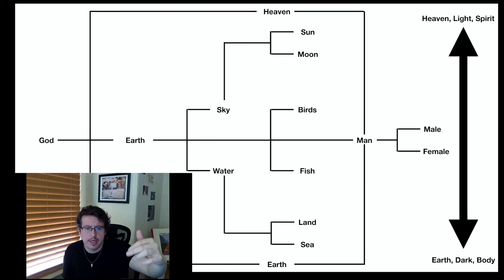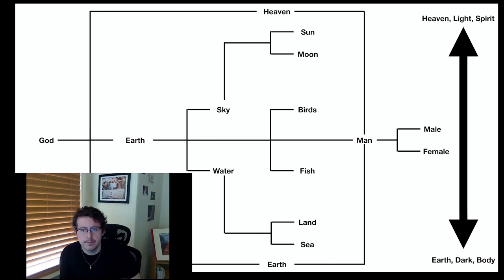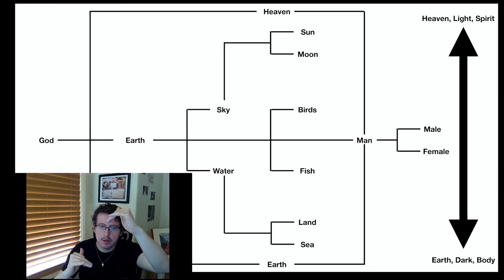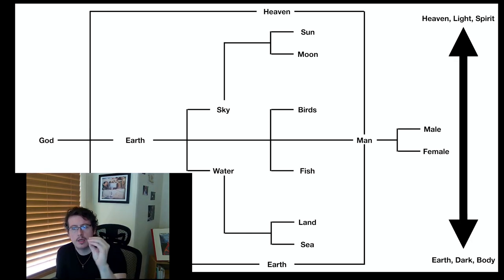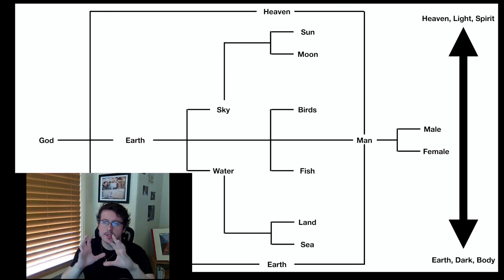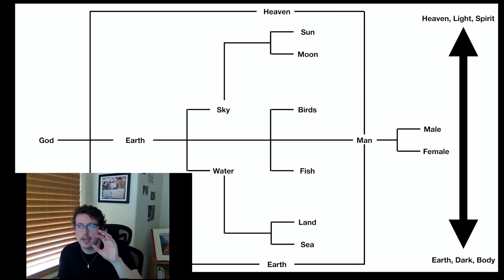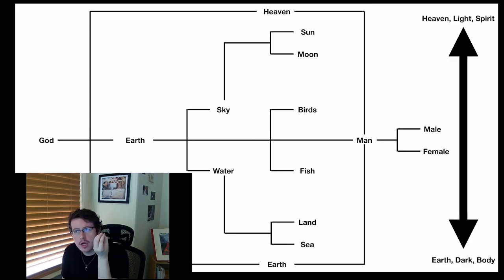That's the story in Genesis, and this is setting up the stage. If you take these fractal patterns I've been showing — where one thing splits into two, above and below — you get a pattern: God created heaven and earth, then earth splits into sky and water, the sky splits into sun and moon, the water splits into land and sea, then birds and fish are created, then man. You have above — heaven — and below — earth. Heaven is something like light and spirit, and the bottom is earth, dark, body. It's not good and bad.